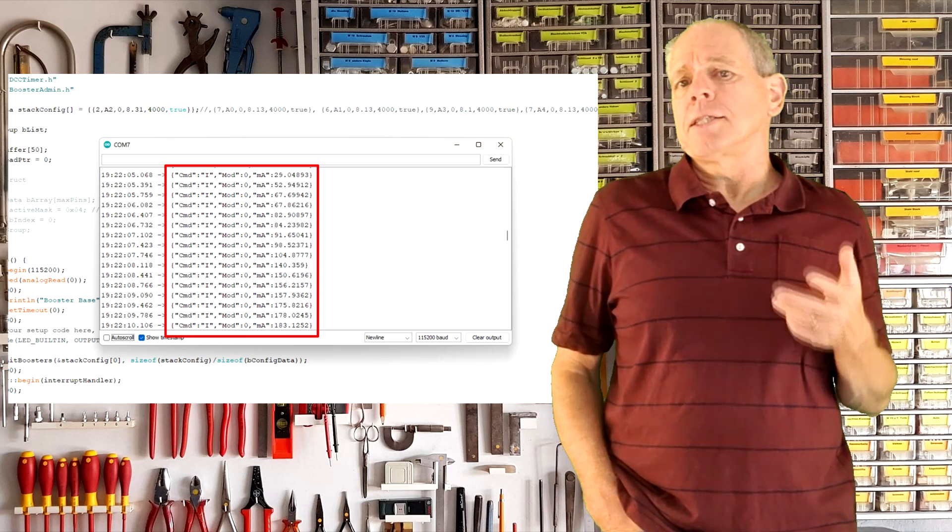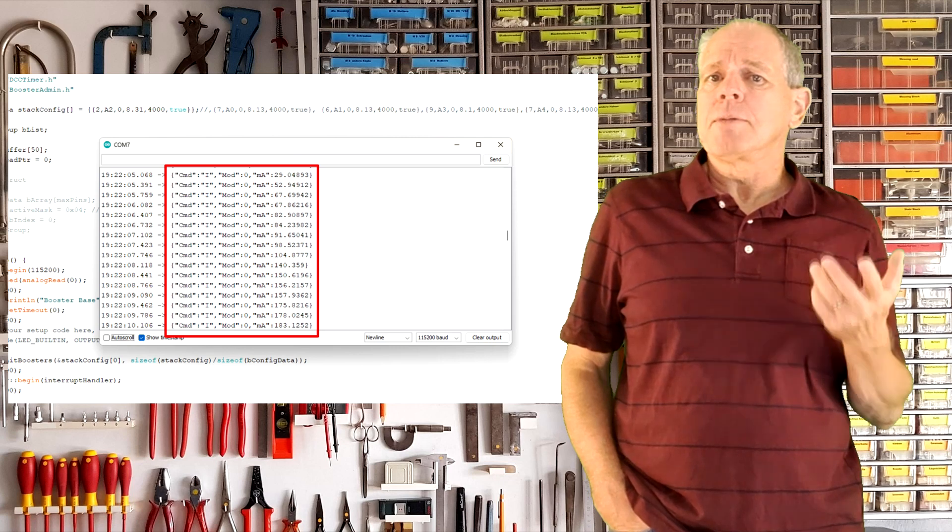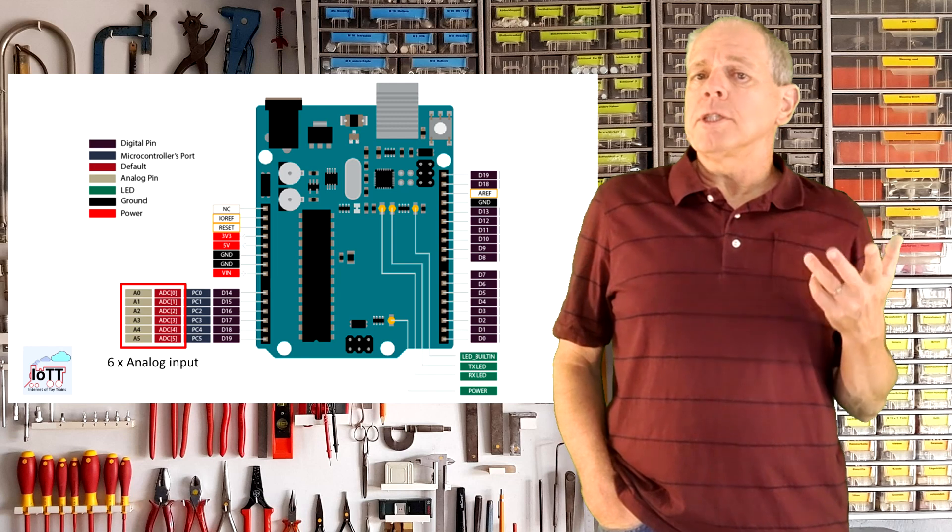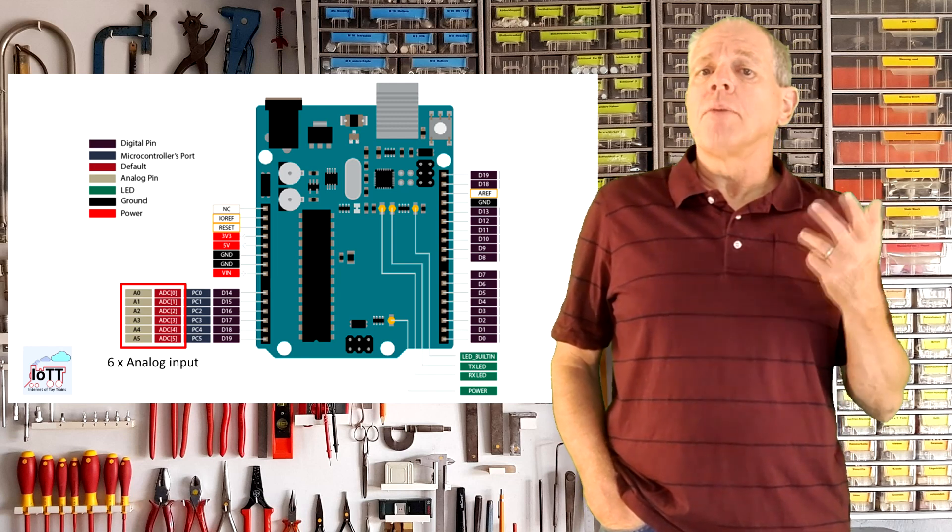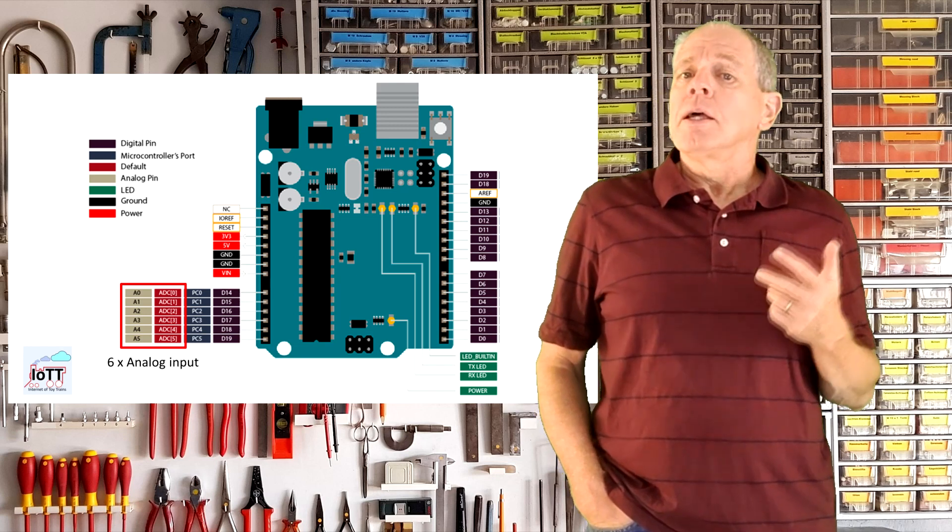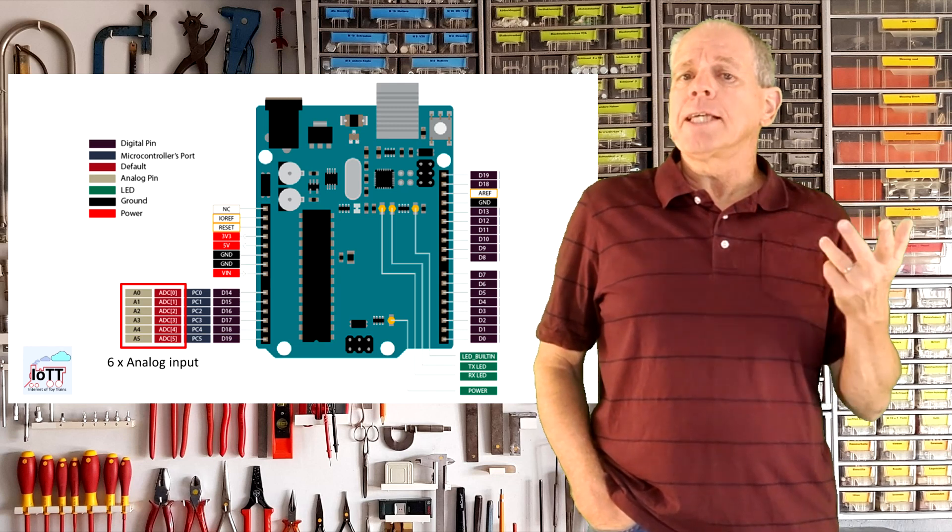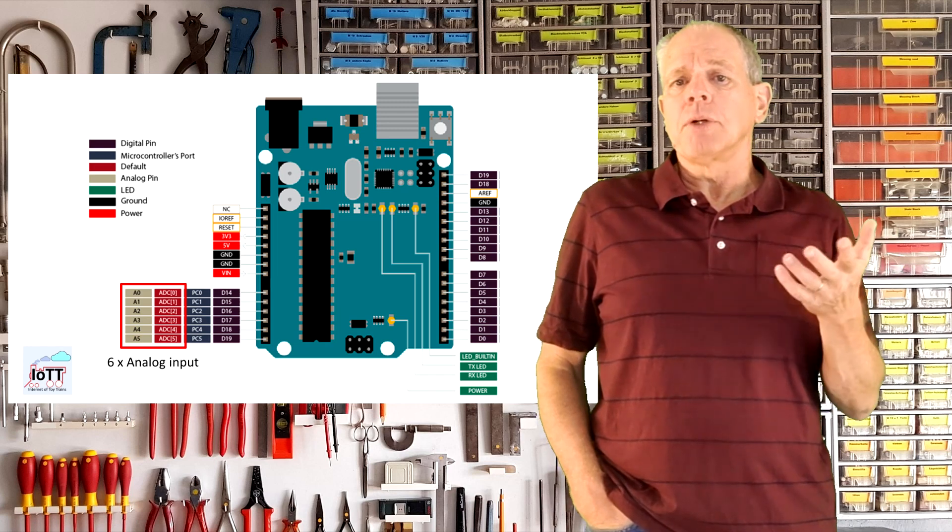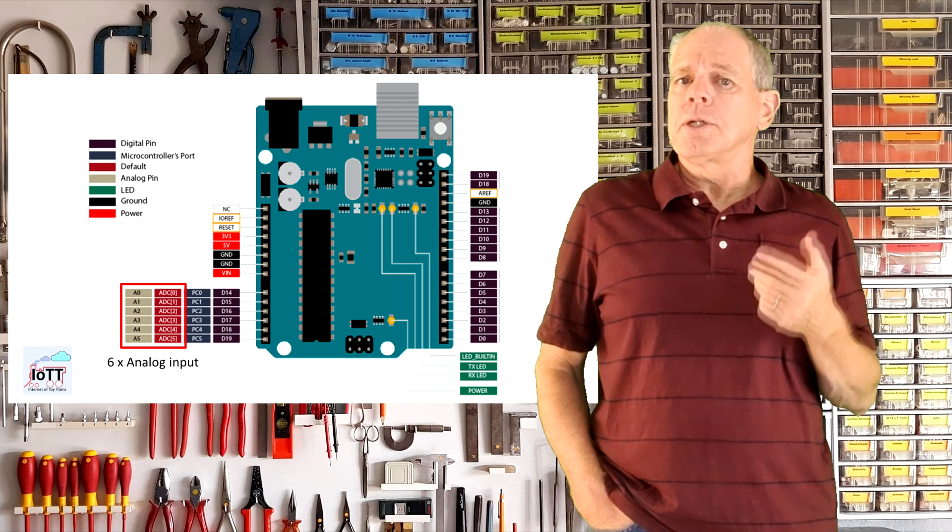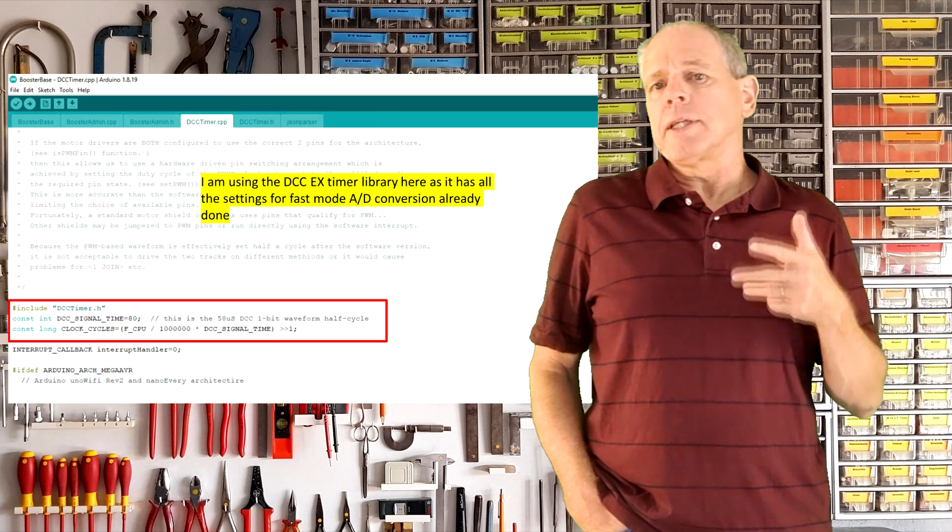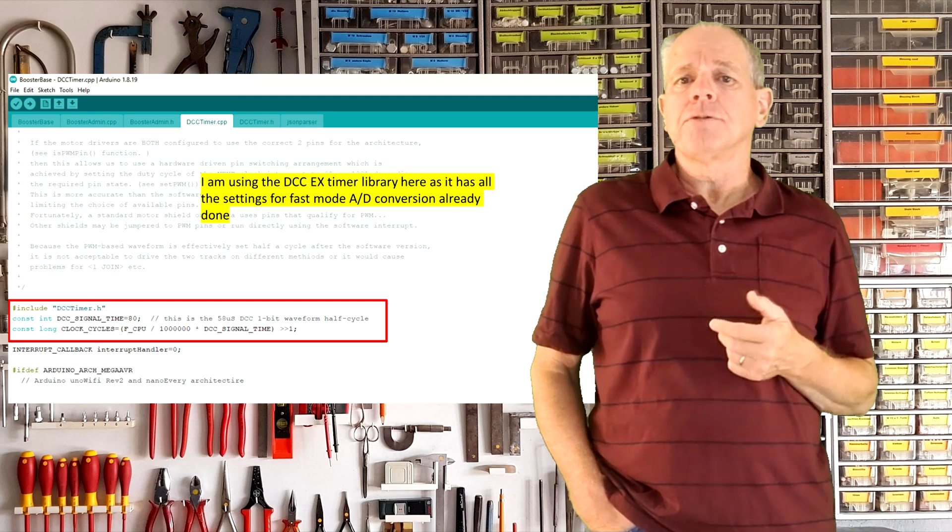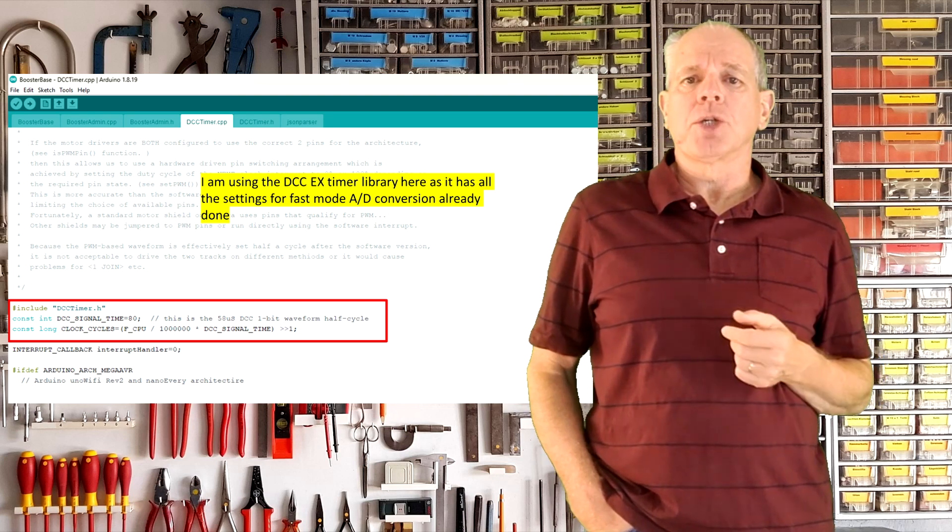To find out I started to think a little more systematically about potential features. The first thing to look into was the number of PowerShield boards that could be stacked on top of each other. The Arduino UNO has six analog inputs which limits the maximum number of current sensors and therefore PowerShield boards to six.